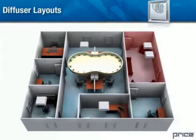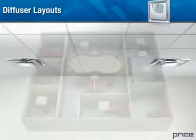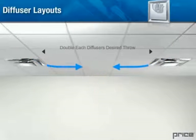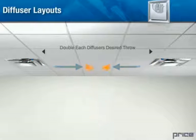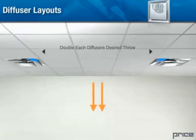Good design 2: Diffuser spacing. Providing adequate space between the diffusers, at least a distance equal to double each diffuser's desired throw, will ensure that the diffuser's throws will not interfere with each other.